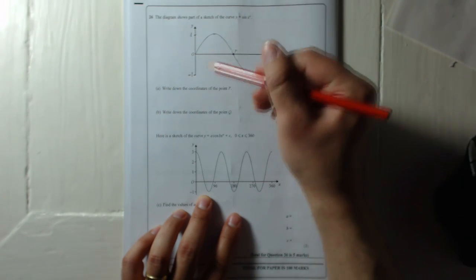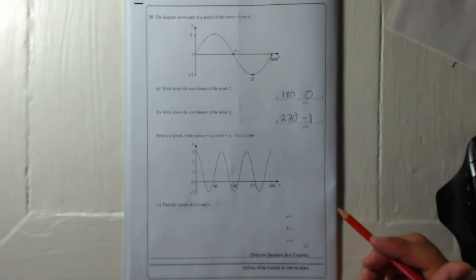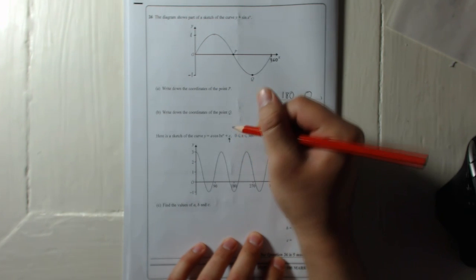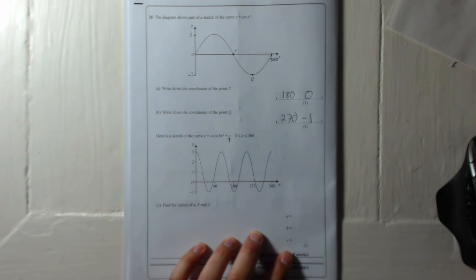And it reaches a high of 1 and a low of minus 1. So we need to remember our transforming graphs rule. The c—if you just randomly add a number on the end of your graph equation, what that will do is it will push the graph upwards.